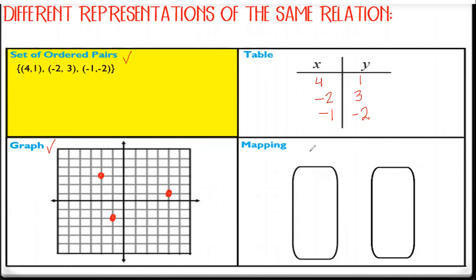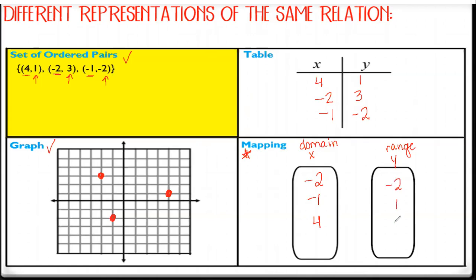The last thing we're going to do is the mapping. With the mapping, we always have our X — another word for X is our domain — and our Ys, which is our range. The mapping is a little different because we go from least to greatest with no repeats. So our X values are four, negative two, and negative one. Written in order from least to greatest: negative two, negative one, positive four. Our Y values are positive one, positive three, and negative two — written least to greatest: negative two, positive one, positive three.